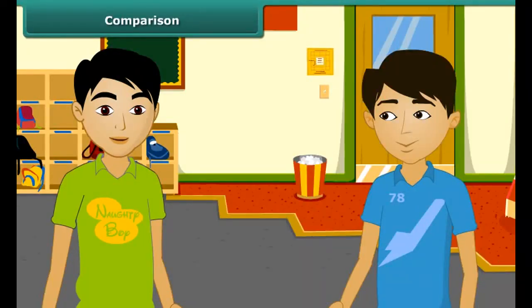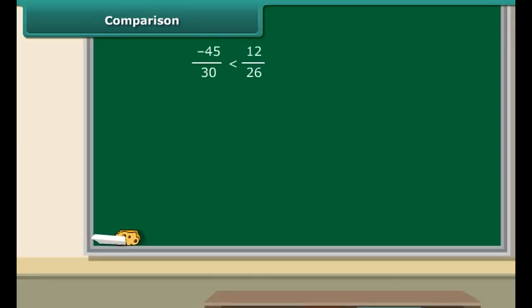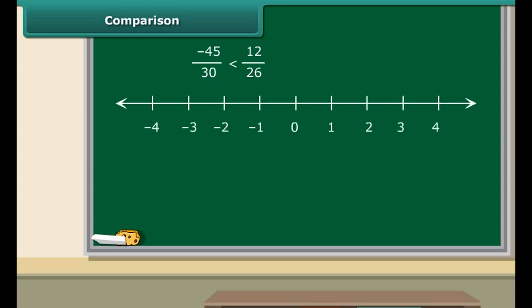If we have two rational numbers, can you compare them? I will tell you how. We know that a negative number is always smaller than a positive number. We can also compare rational numbers using a number line — the further right a number is, the greater it is. For example, 2 by 3 lies to the right of 1 by 3, so 2 by 3 is greater than 1 by 3. Similarly, minus 1 by 3 is greater than minus 2 by 3 because minus 1 by 3 comes to the right of minus 2 by 3.